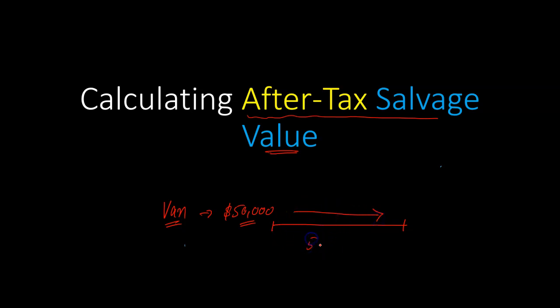So let's suppose that the useful life of this van is five years. So this van is probably going to help you generate some cash flow because it's going to help you in the catering business. You're going to generate some sales, so on and so forth.